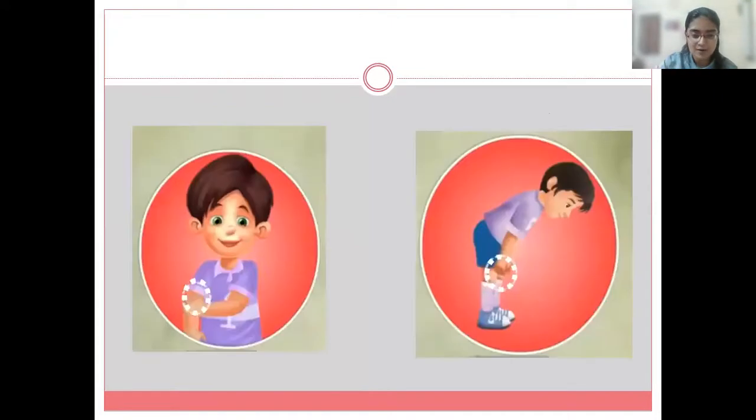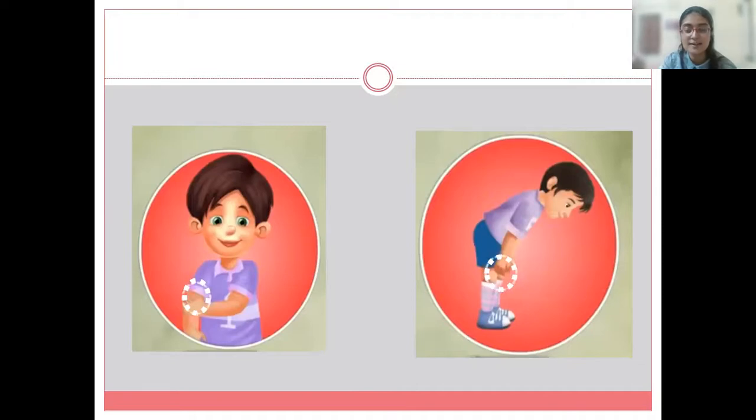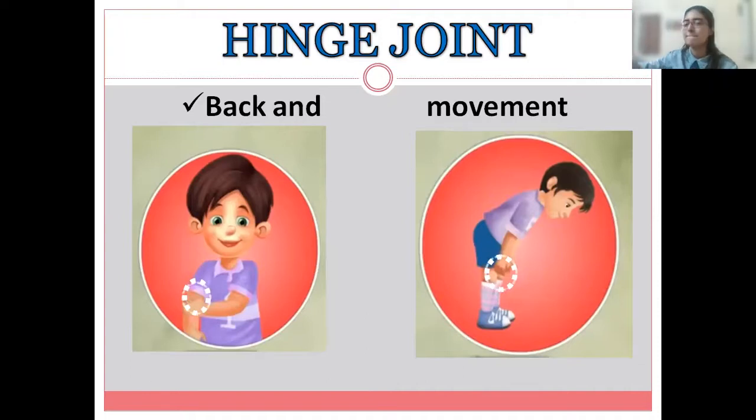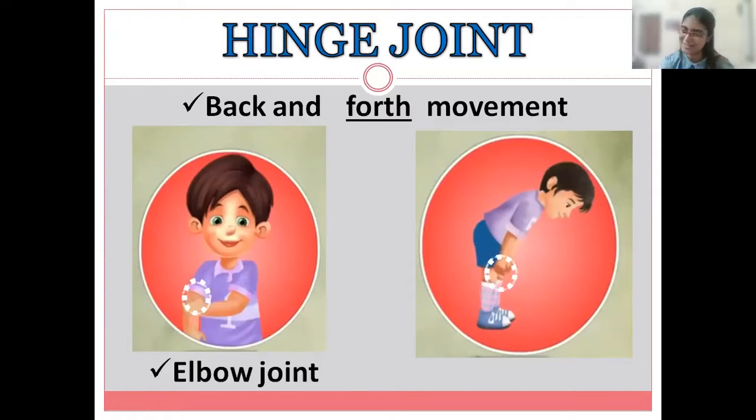See? Now, two areas are circled again. Can you check? We were trying to move our elbow. We were able to move our knee. So, what is this joint called? Very good. It is known as hinge joint. And the movement is allowed only back and forth. Back and forth. So, the examples are elbow joint and knee joint. Perfect. Very good.